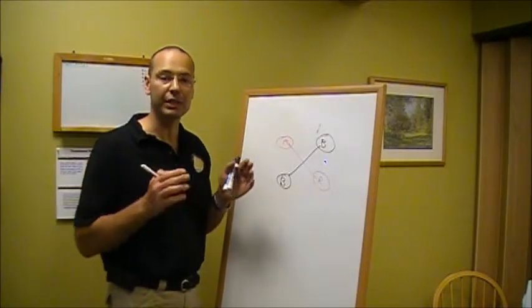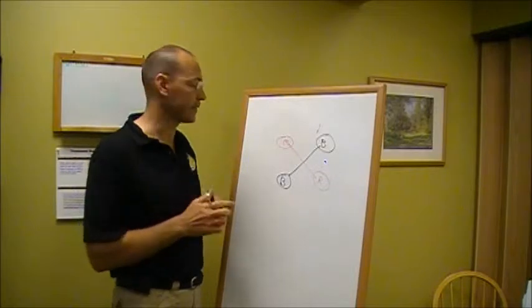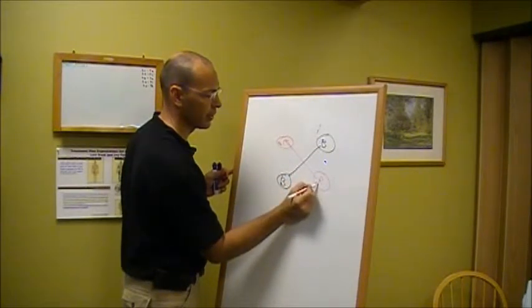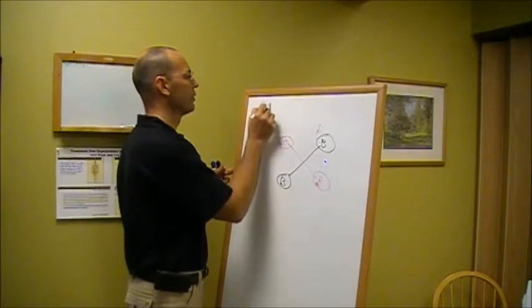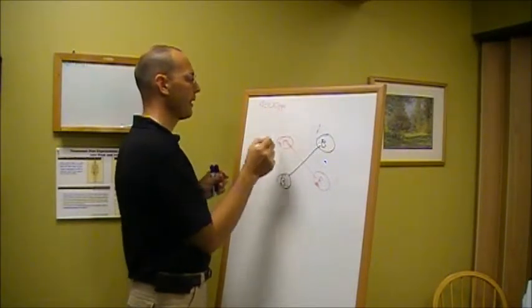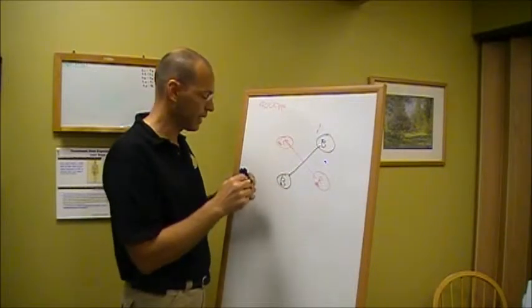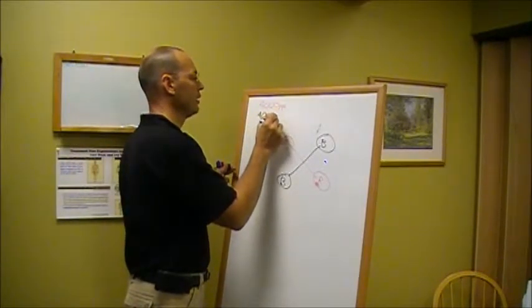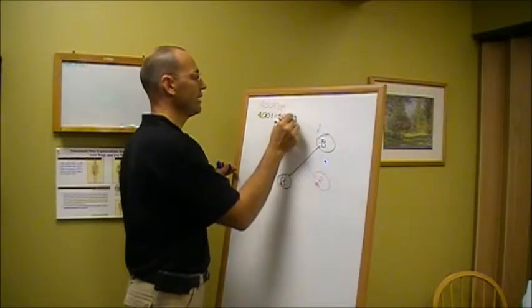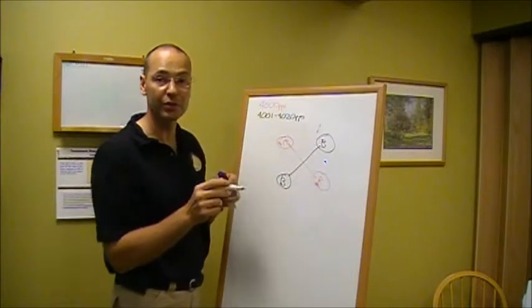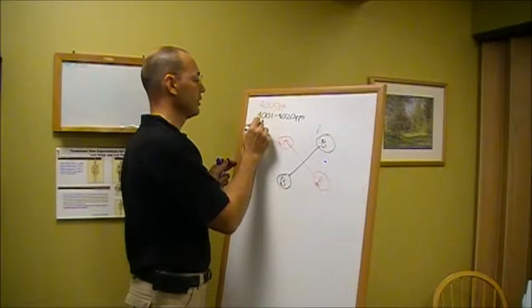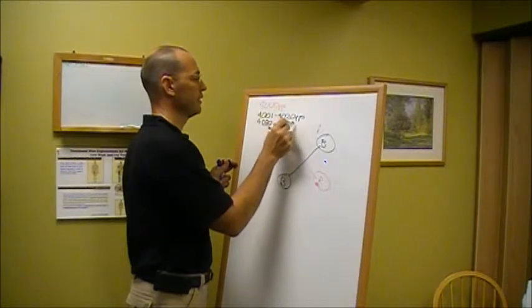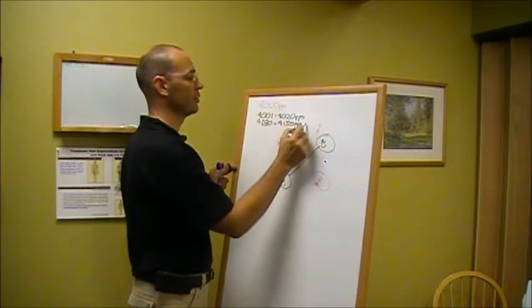Interferential uses the principle of interference to create its effect. We have a base carrier wave which operates at 4,000 hertz, or 4,000 cycles per second—4,000 pulses per second running through one set of pads. It then uses a variation upon that. It might go from 4,001 to 4,020 pulses per second if we're trying to affect inflammation, or 4,080 to 4,150 pulses per second if we're trying to affect pain.